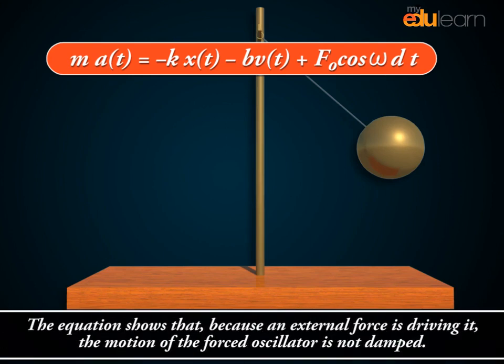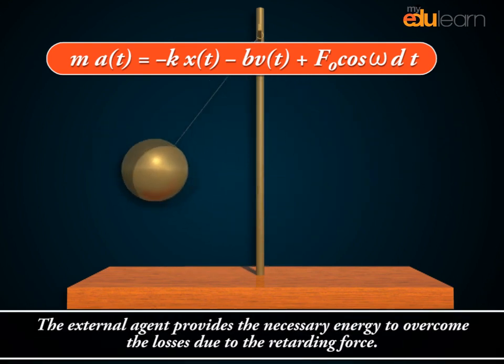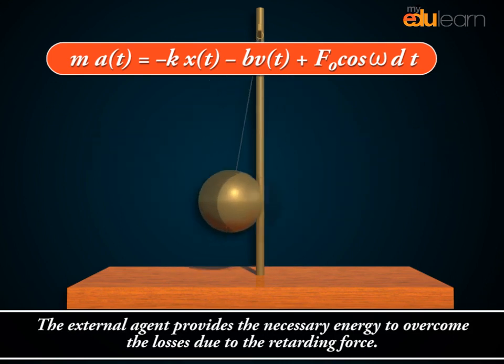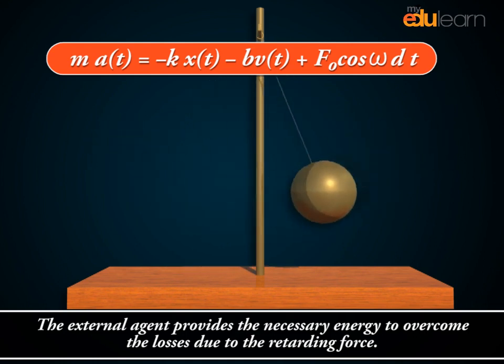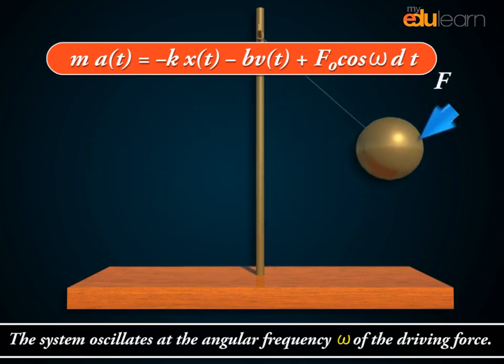The equation shows that because an external force is driving it, the motion of the forced oscillator is not damped. The external agent provides the necessary energy to overcome the losses due to the retarding force. The system oscillates at the angular frequency omega of the driving force.